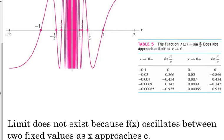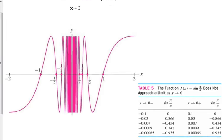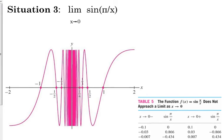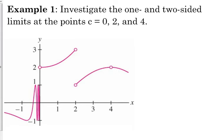This is oscillating behavior — you can't nail it down. This limit does not exist because the function oscillates between negative one and one as you approach zero. The only time this is going to come up, they're going to give you a graph and you need to recognize that that part of the graph is bouncing back and forth, so the limit doesn't exist. Now let's look at some limits and talk about one-sided and two-sided. They want us to determine the one-sided and two-sided limits at the points zero, two, and four.